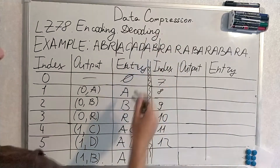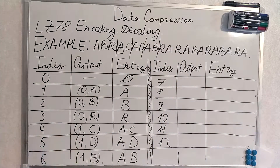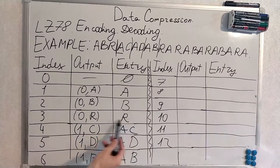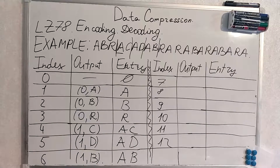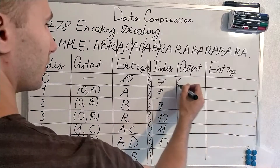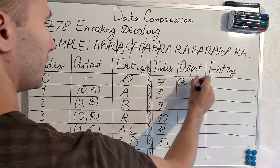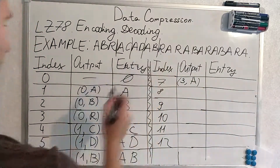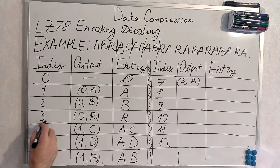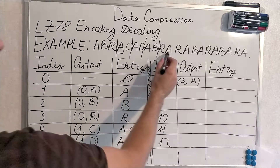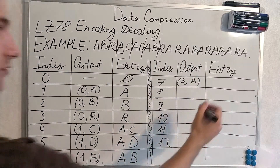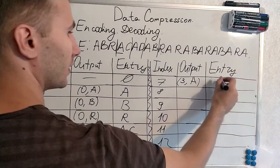Next is 'ra'. 'r' is already present in our table at index 3. Thus the output will be '3a' because we are at 'r', index 3, and the next symbol is 'a', giving us entry 'ra'.